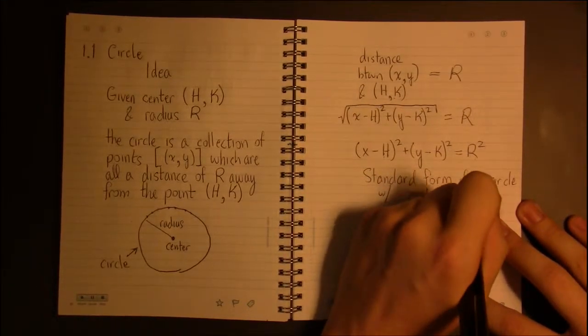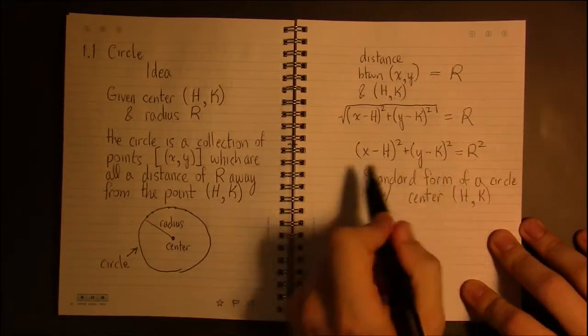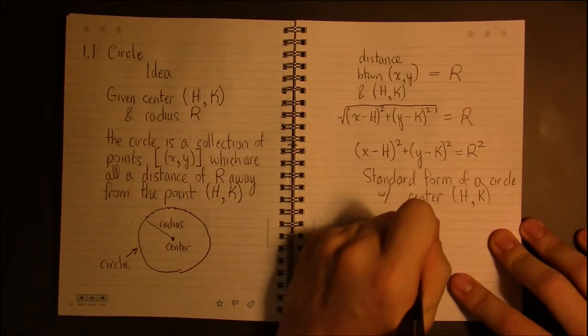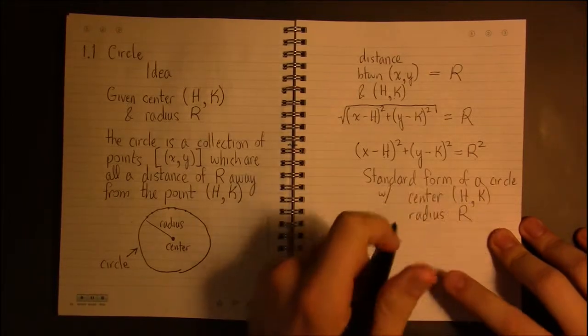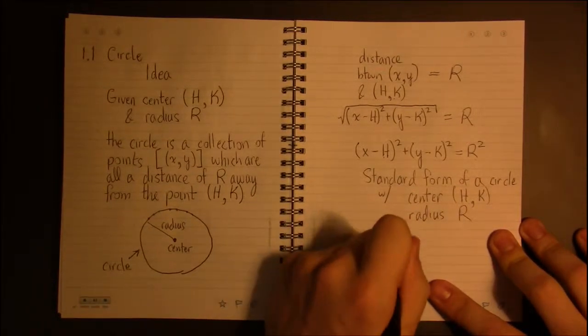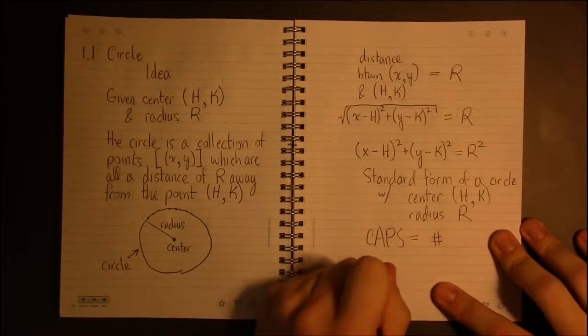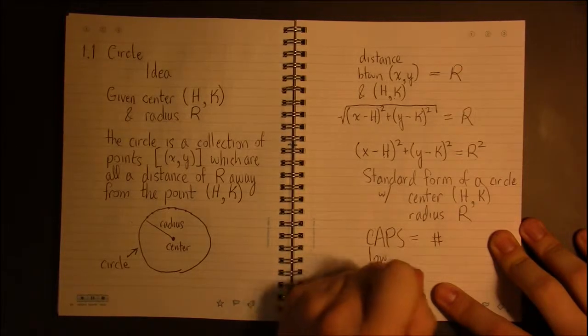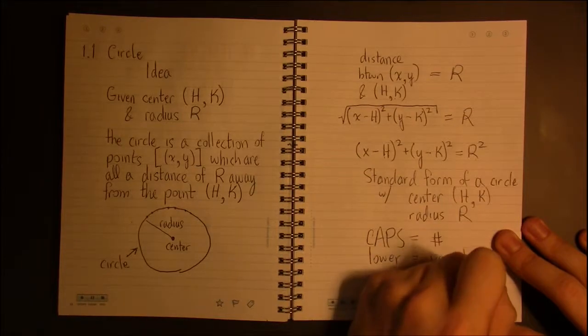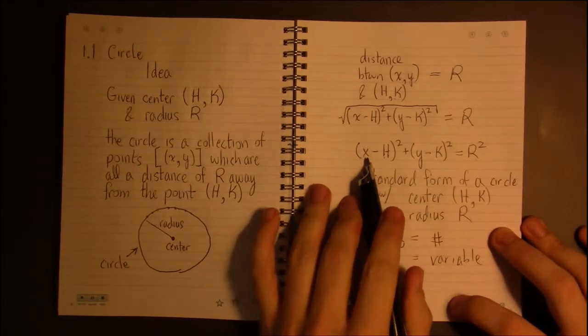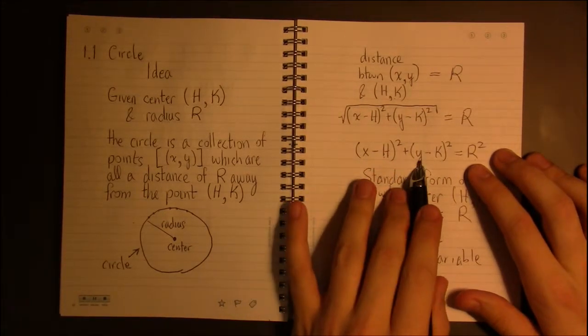Now you may notice I'm using capital letters and lowercase letters intermittently. The reason for this is that everything in capital letters is supposed to be a number, everything in lowercase is a variable. So when you write the equation of a circle, they're supposed to be X's and Y's involved.